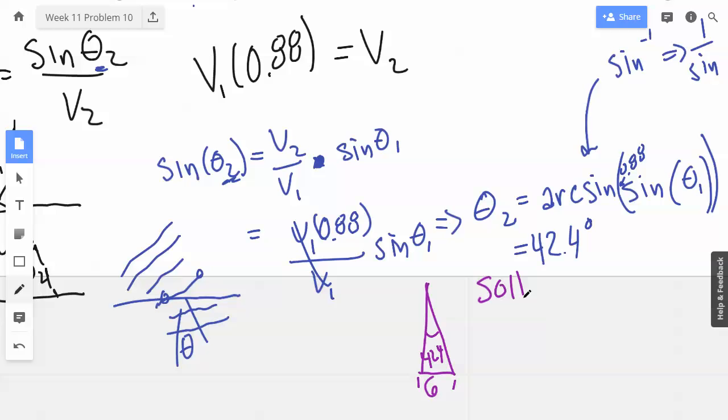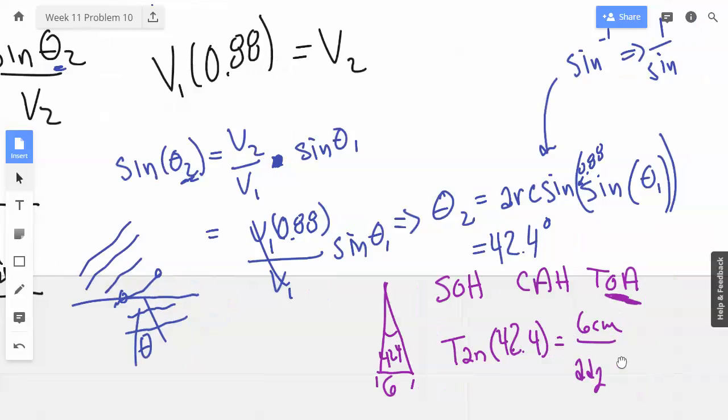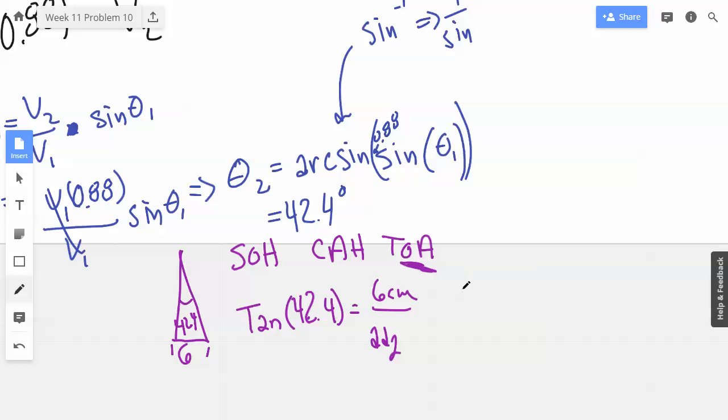So do our Soh Cah Toa. We have an opposite and we want adjacent. We have a tangent of 42.4 equals opposite, which is six centimeters, over adjacent. So we have adjacent, which is our depth, which equals six centimeters divided by tangent of 42.4.